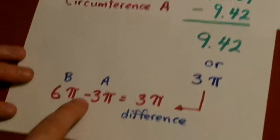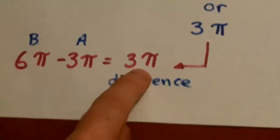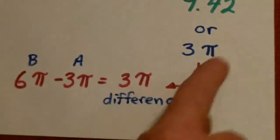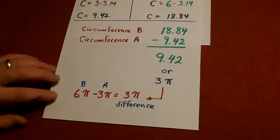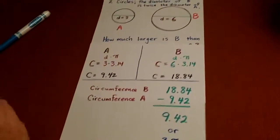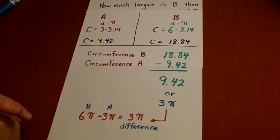So, either one of those two can be your answer. So, 6 pi minus 3 pi is equal to the difference of 3 pi. Or, there's your numerical answer. Okay, those have been our tricky examples.